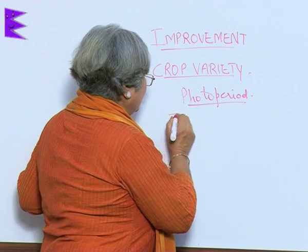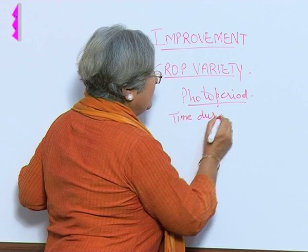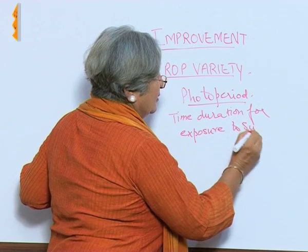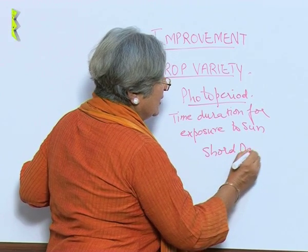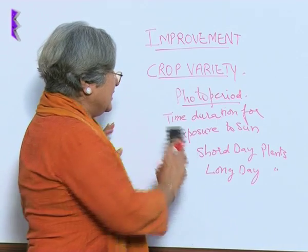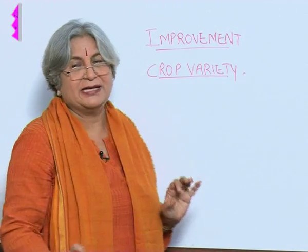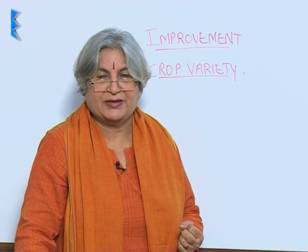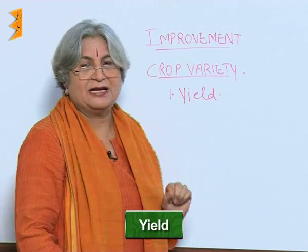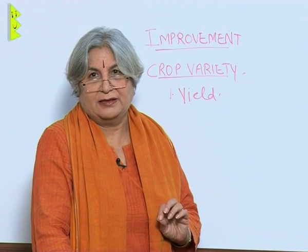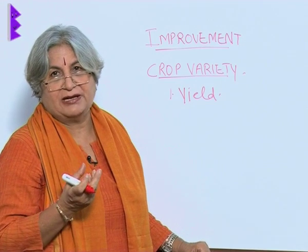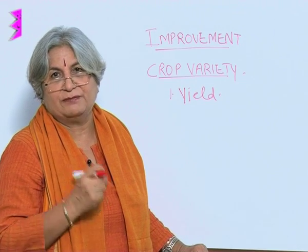The definition of photoperiod: time duration for exposure to sun — short day and long day plants. Obviously, there are certain desirable traits for which varieties are evolved. The desirable traits — one is, of course, yield. Yield is calculated as total output per hectare. It is not just how much grain is in a little area, but we take a certain unit in which how much grain has been produced is the criteria, and obviously this is the most important criteria.